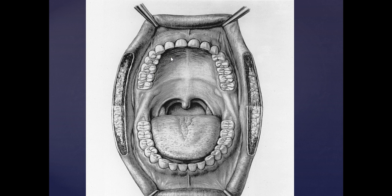Next you've got your hard palate followed by your soft palate. Your hard palate is going to be the anterior part of the mouth, while your soft palate is going to be the posterior portion of the mouth. Next you've got the uvula, which dangles down from the top of the roof of your mouth.